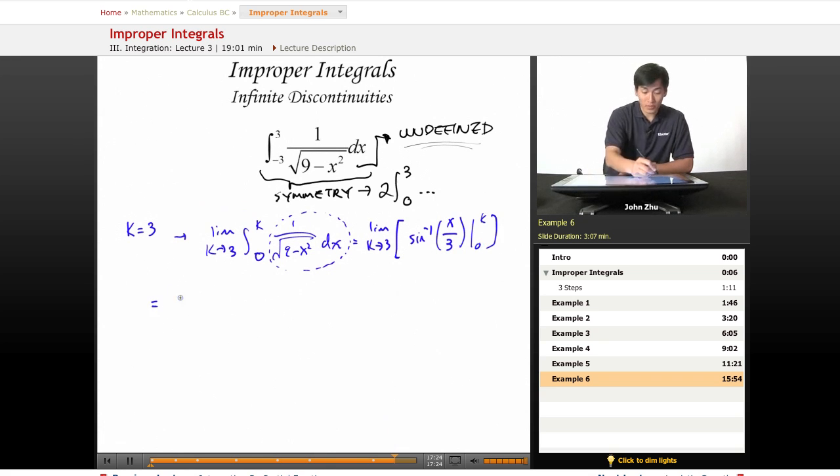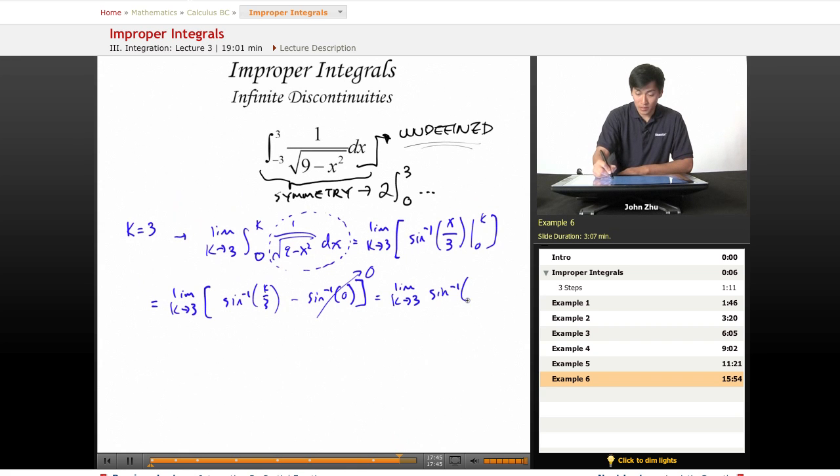So we have limit as k approaches 3, sine inverse of k over 3 minus sine inverse of 0. The inverse sine of 0 is going to be 0, so we're left with limit as k approaches 3, sine inverse of k over 3.